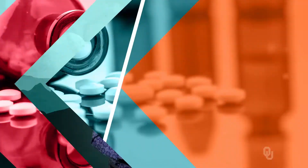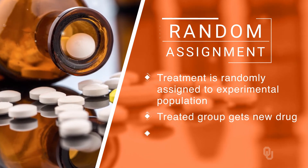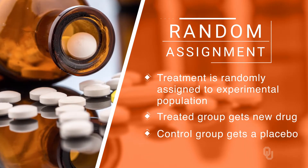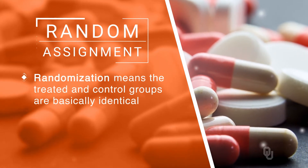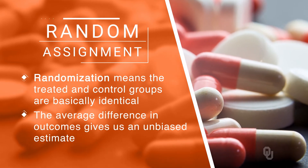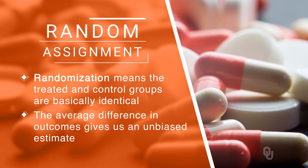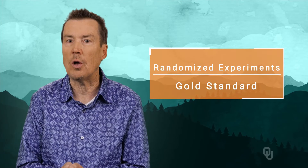This is the logic behind how medical trials test whether a new drug or therapy is effective. The treatment is randomly assigned to the experimental population — the treated group gets the new drug, the control group gets a placebo. Since randomization means that the treated and control groups are basically identical, even on unobservables, the average difference in outcomes across the two groups gives us an unbiased estimate of the causal effect of the new drug on health. So randomization solves the selection problem and eliminates the selection bias we encounter in observational studies. Researchers often refer to randomized experiments as the gold standard of causal inference.